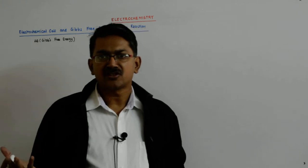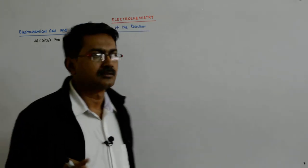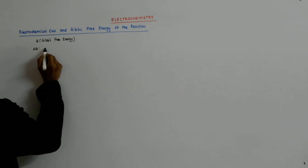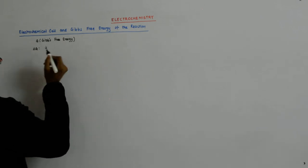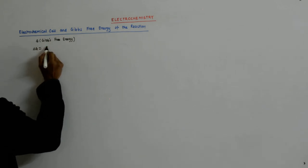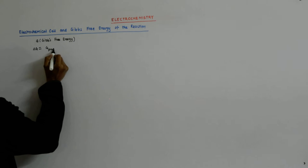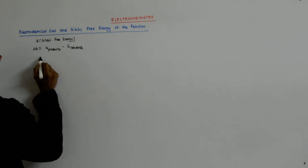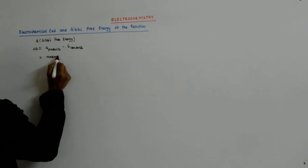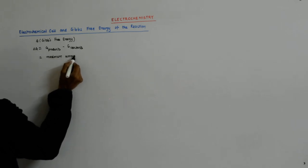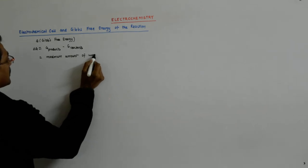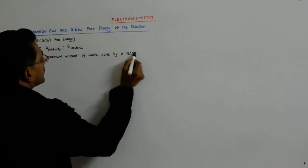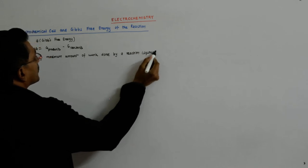The change in Gibbs free energy, that is delta G — where G is the Gibbs free energy — is equal to G of products minus G of reactants. That is equal to the maximum amount of work done by a reaction, or by a system which undergoes a chemical reaction.